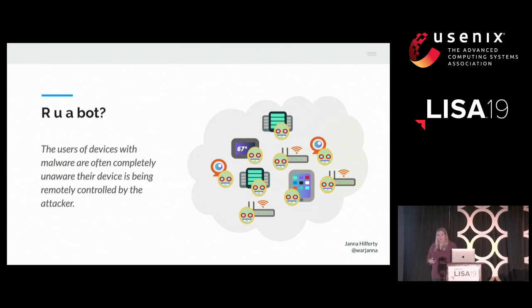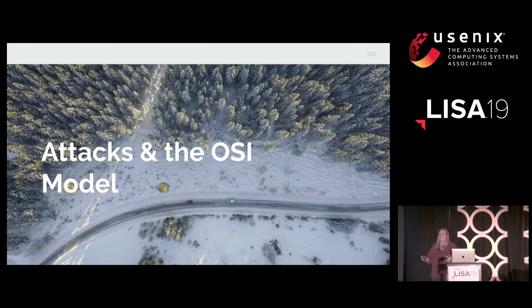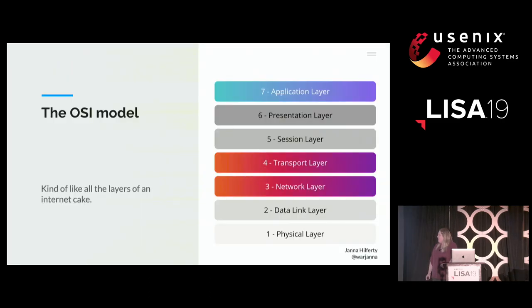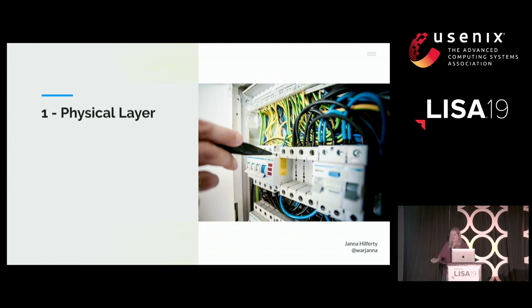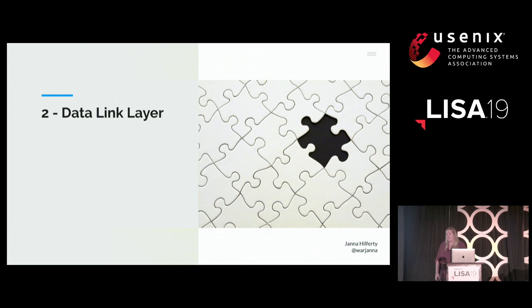Now that we've talked about DDoS attacks and how attackers use IoT devices to make botnets, let's look at the OSI model — or as I like to call it, all the layers of the internet cake — and see where attacks tend to happen. Briefly: the physical layer is exactly what it sounds like, just the stuff physically connecting things like ethernet cables, bridges, and switches. The data link layer is the link between devices on the same network — if my iPhone and my router are on the same network, they transfer data in frames on the data link layer.